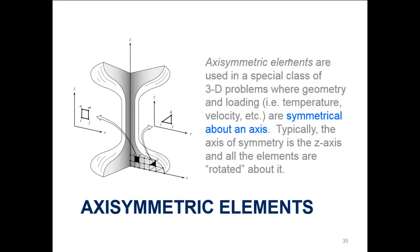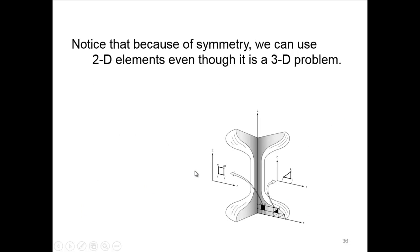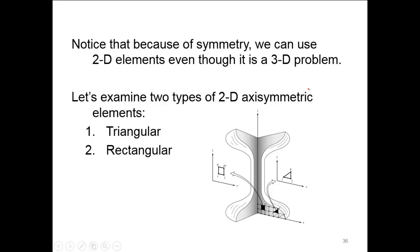Now let's look at axisymmetric elements. These are used in special cases of 3D problems where the geometry and loading are symmetrical about an axis — typically the z-axis — and all elements are rotated around it. If the geometry and forces are symmetric, we only need to analyze one side, which minimizes computational time and expense. Because of this symmetry, we can use 2D elements instead of 3D elements, even though it is a 3D problem with thickness. We'll examine two types of 2D axisymmetric elements: triangular and rectangular.